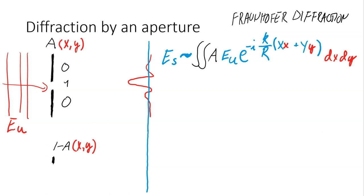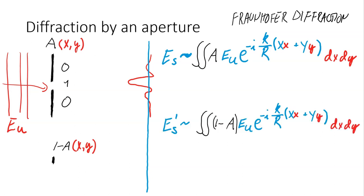Next, we are interested in diffraction of the incident wave from a complementary aperture. In this case, instead of a hole, we have a block. It is a function with values one minus a. The diffraction integral can be written with this aperture, and further it can be separated into two parts of the aperture function.